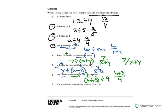See how you do on the last one: the quotient of the quantity k minus 10, and m. Don't forget that we have the word quotient and the word and — that and is where your division is going to be. And don't forget quantity means we need to put in parentheses around k minus 10. So you should have written k minus 10 in parentheses divided by m. As a fraction, it is k minus 10 over m.